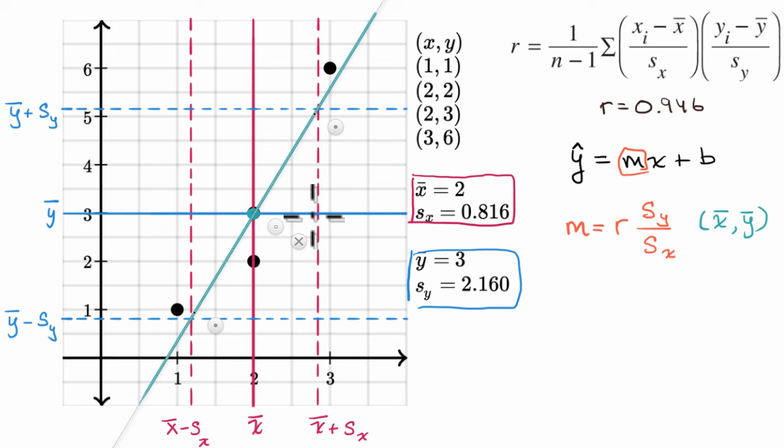That has parallels to when you first learn about slope. Change in y over change in x. Here you're seeing the, you could say the average spread in y over the average spread in x. And this would be the case when r is one. So let me write that down. This would be the case if r is equal to one.